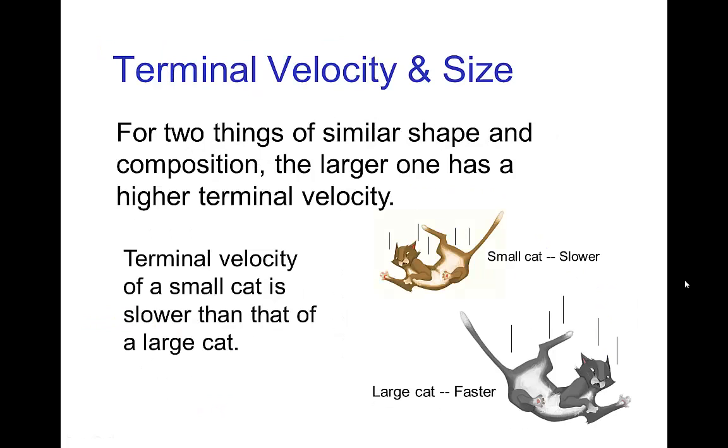Now, that was for an average size cat, but if we have a small cat versus a large cat, the large cat will have a higher terminal velocity than the small cat. In fact, if we have two things that have similar shape and composition, then the larger one has the higher terminal velocity. Of course, the larger one weighs more, but you might also wonder, well, the larger one also has a larger area, so perhaps that compensates for the weight. But it doesn't. The larger weight of the larger cat has a more significant effect than its surface area, so it does indeed fall faster than the small cat.